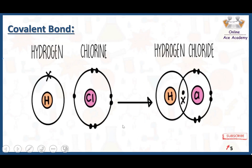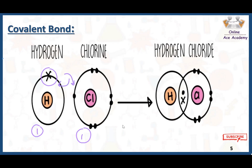Let's look at an example with hydrogen and chlorine. Hydrogen has only one electron in the outermost shell, and chlorine has seven electrons in the outermost shell. Hydrogen needs one more electron to get stable, and chlorine also needs one more electron to get stable. So they will share their electrons with each other, and while sharing their electrons they will form a bond — that bond is called a covalent bond.